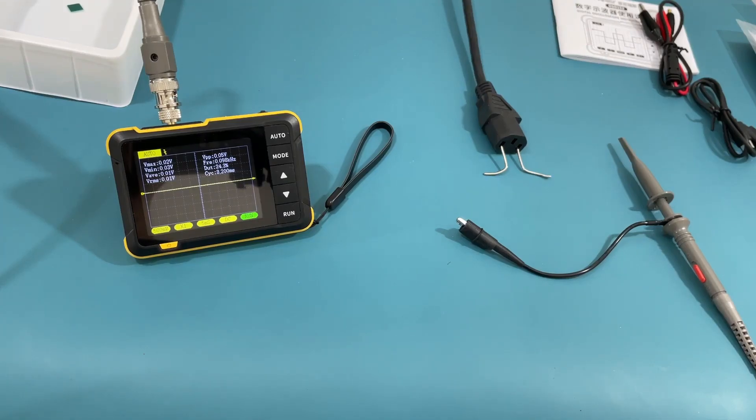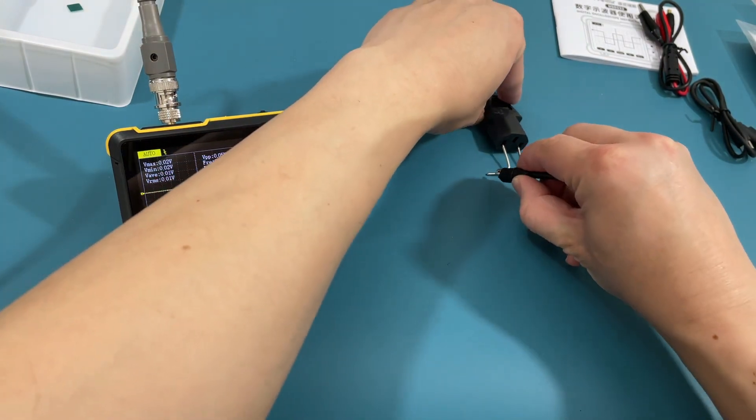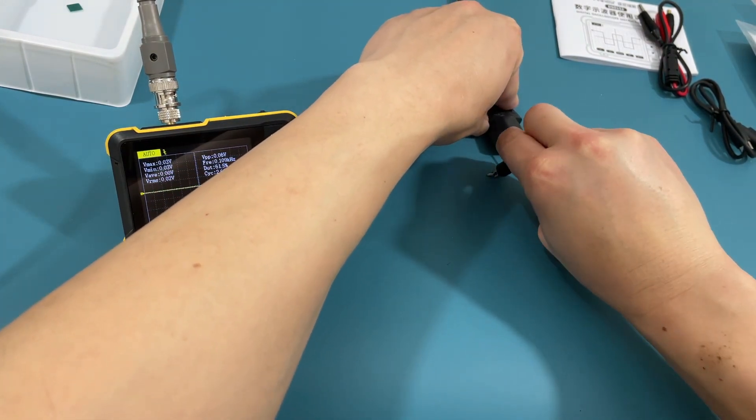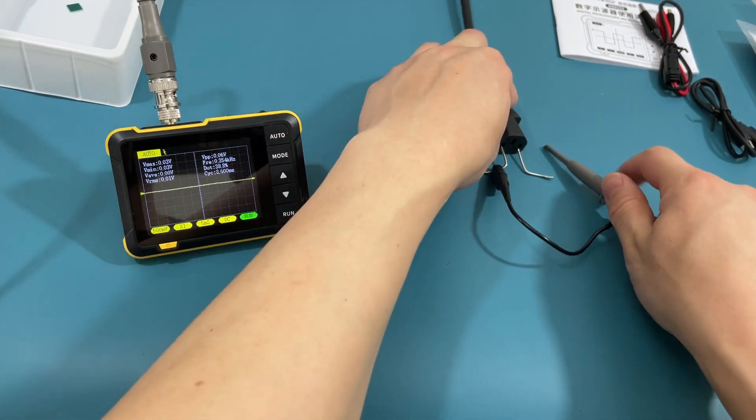For this test, we have a power cord connected to the wall outlet. We want to see the voltage coming out of the power cord. First, we connect the probe to each end of the wire.